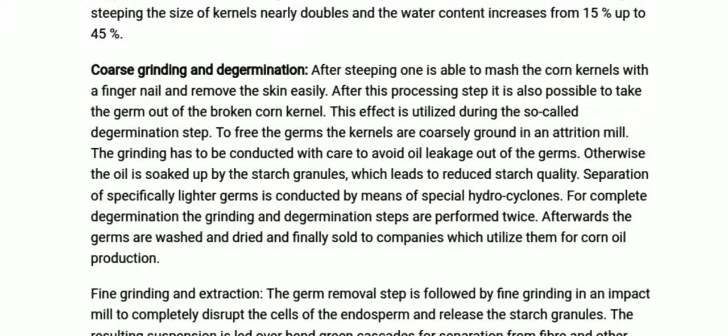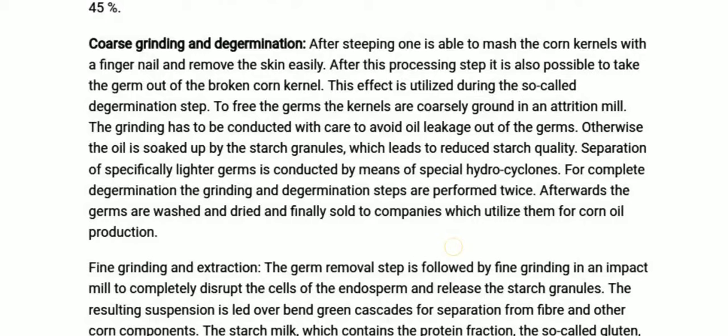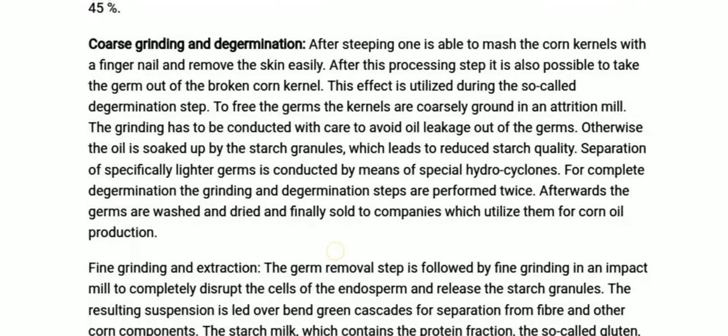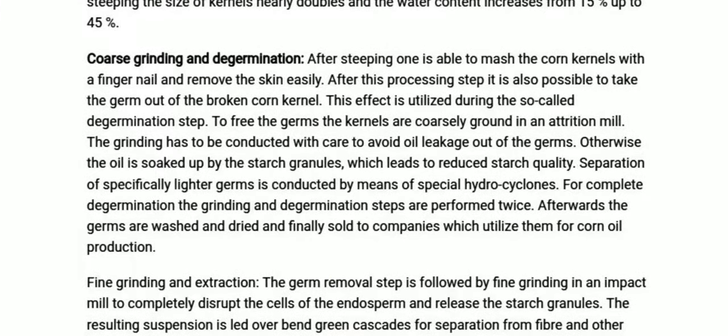As seen in wheat processing, sieving, milling, and de-germination are consecutive steps performed in sequence. Afterwards, the germs are washed and dried and finally sold to companies which utilize them for corn oil production.